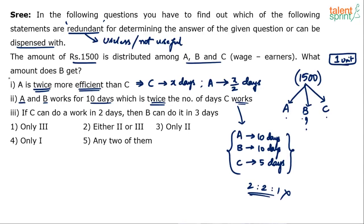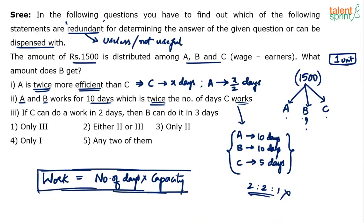Don't remember what is given in statement number 1 — you are not supposed to. Only look at statement number 2 independently. From 2, we know the number of days for which they have worked. But the amount of work then is what? Remember, what is the work equation? Work is equal to the number of days for which a person works into the capacity of the person — men into days. Work is proportional to men into days. Men here indicates the capacity of the man: A's capacity into number of days for which A works, B's capacity into number of days for which B works, C's capacity into number of days for which C works. The point is, 2 alone does not give us the answer because it only tells us the number of days for which they have worked — we have no clue about the capacities.